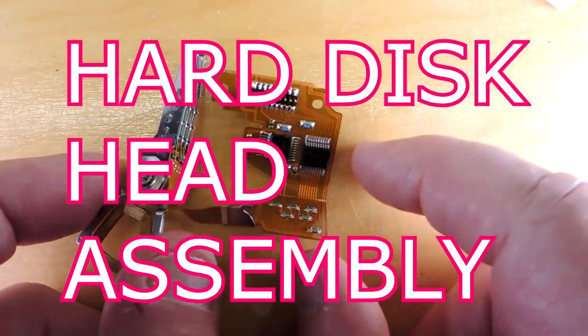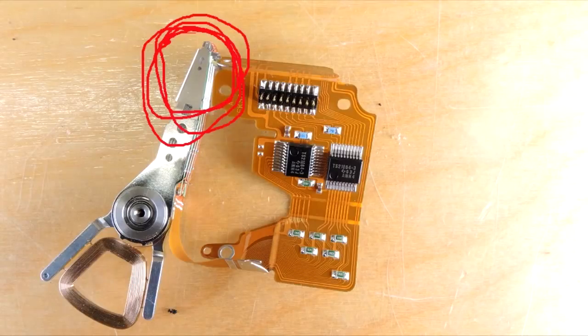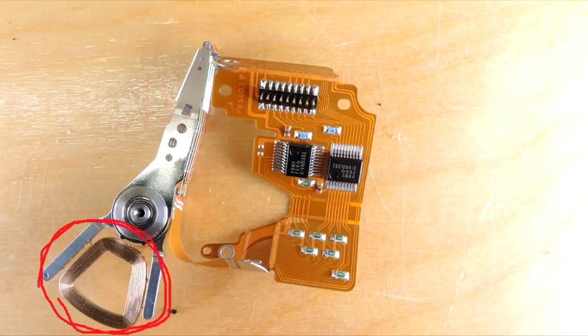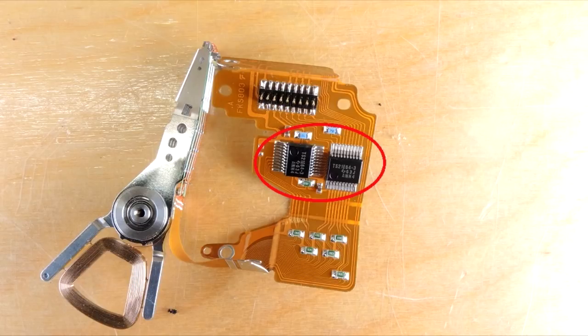Here's an old head assembly from a hard disk drive. It has eight heads on one side and the actuator coil which was used to move the assembly. It was attached to this flexible polyamide circuit board which had a couple of integrated circuits.